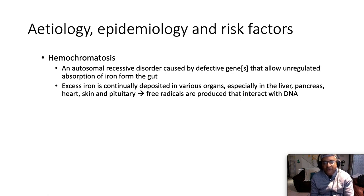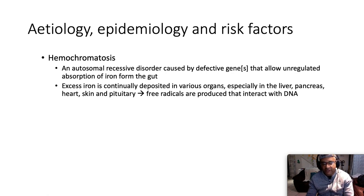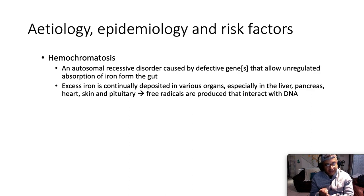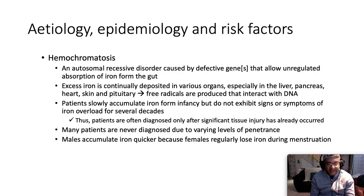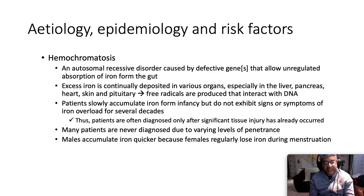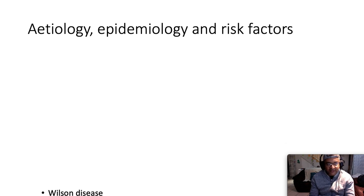Hemochromatosis is an autosomal recessive disorder caused by defective genes that allow unregulated absorption of iron from the gut — iron overload is the buzzword. Excess iron is continually deposited into various organs, especially the liver, pancreas, heart, skin, and pituitary. Free radicals are produced that interact with DNA. Patients slowly accumulate iron from infancy but do not exhibit signs or symptoms for many decades, and males accumulate iron quicker because females regularly lose iron during menses.